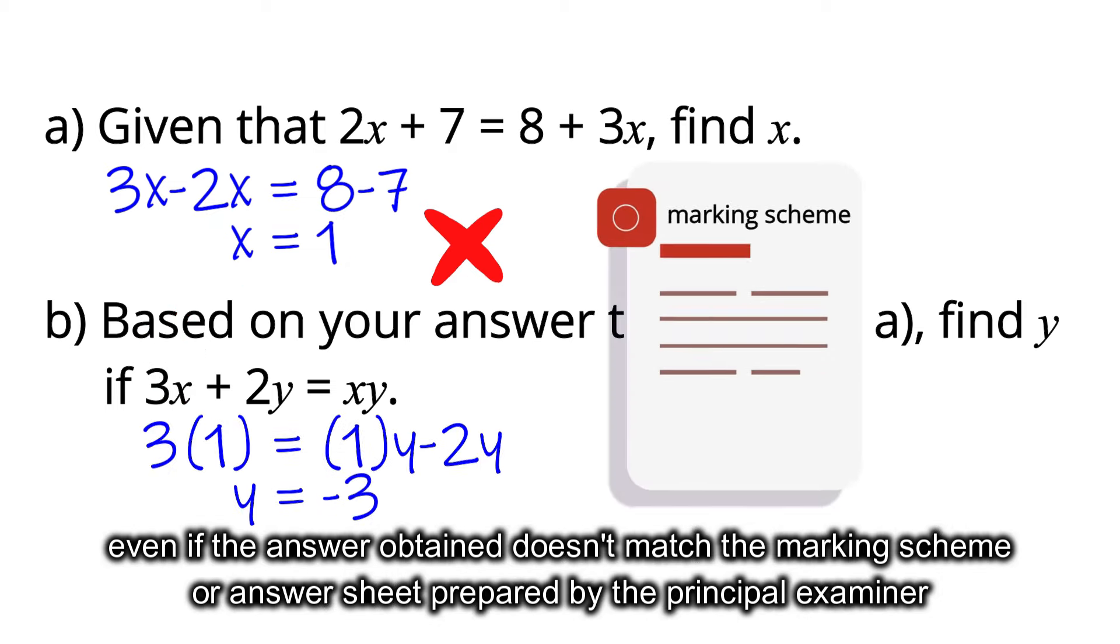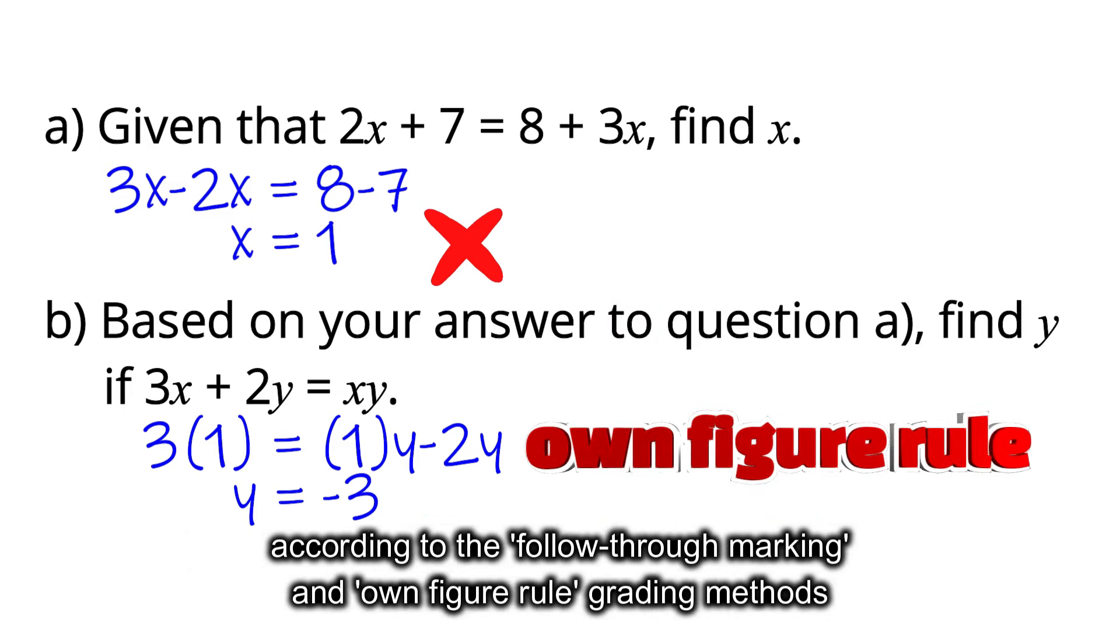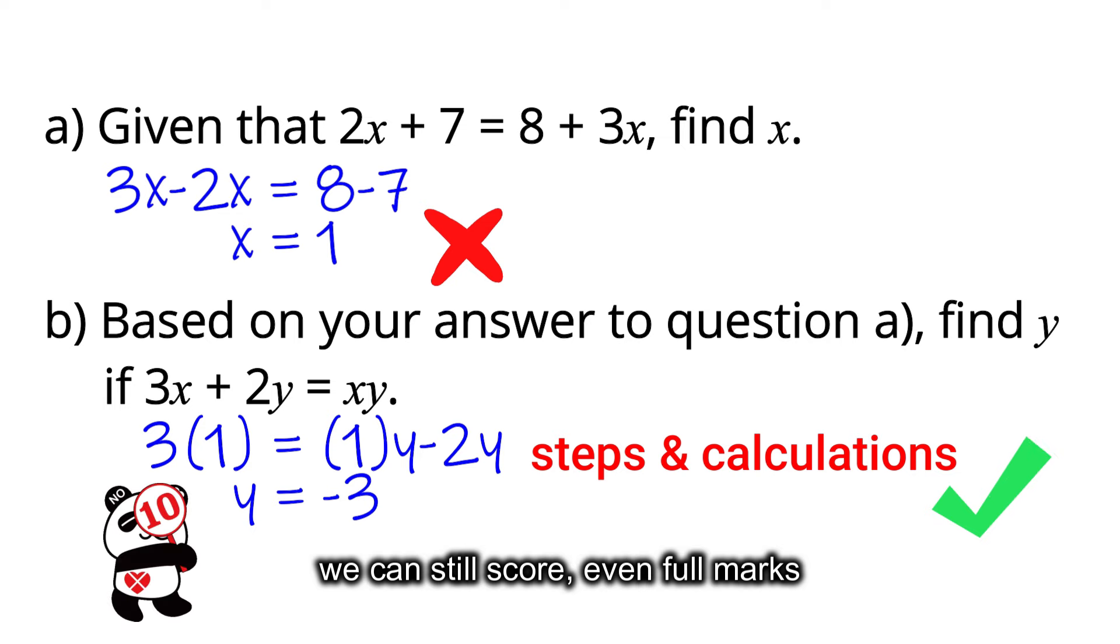If we bring the answer from question A to question B and the method is correct, even if the answer obtained doesn't match the marking scheme or answer sheet prepared by the principal examiner, according to the follow-through marking and own-figure rule grading methods, we can still score, even full marks.